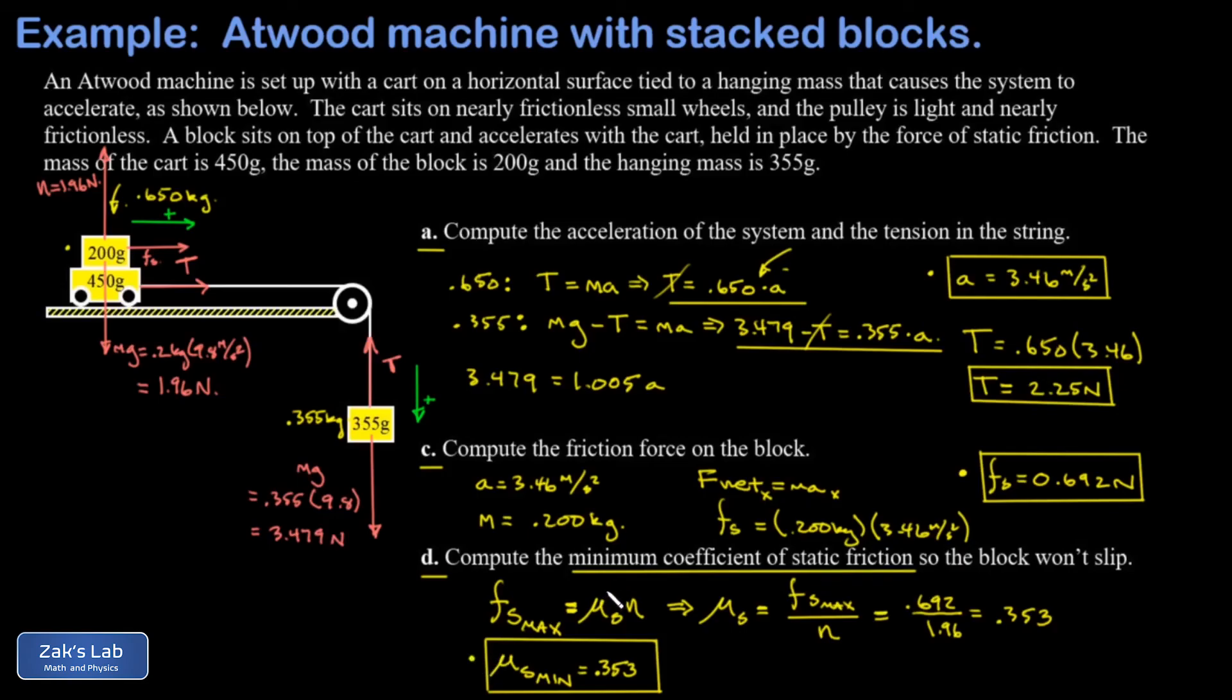that if it got any smaller than 0.0353, I wouldn't be able to produce the static friction force that I measured in Part C. It would require more than the maximum possible and the thing would break loose and slip off the back of the cart.